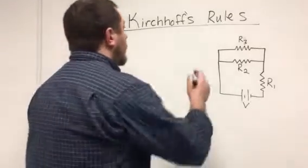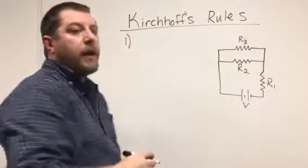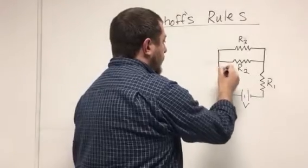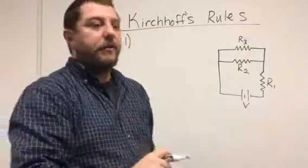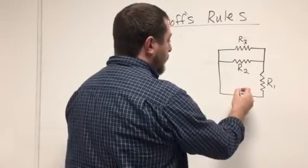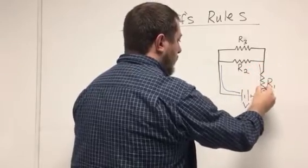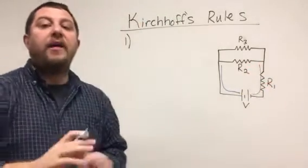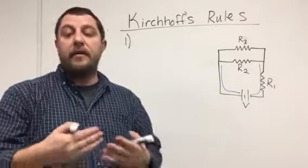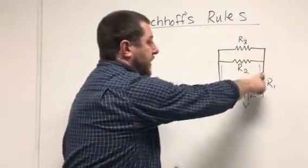The first rule says suppose I have some current in three different branches. This bottom branch, everywhere in the blue, the same amount of current is going to be flowing through that branch. This entire branch right here is going to feel the same amount of current.